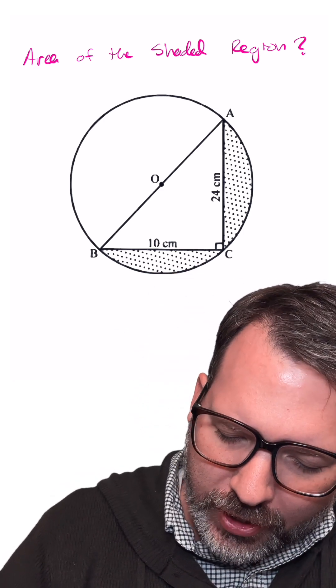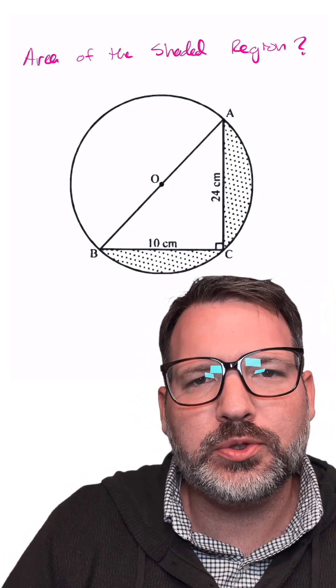What is the area of the shaded region here? We've got a circle and a 10 by 24 right triangle.